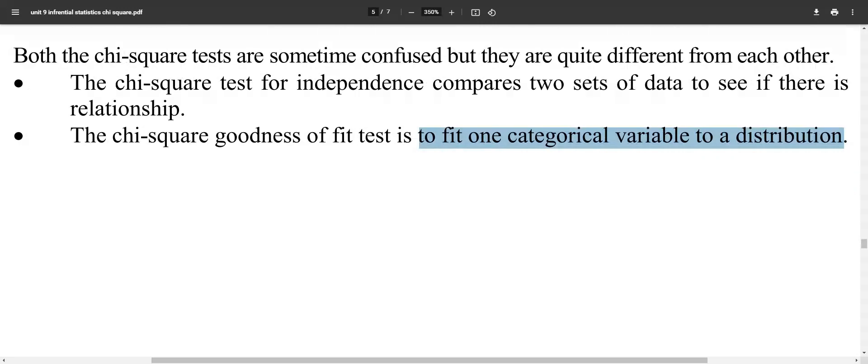I repeat, I repeat: the Chi-Square tests sometimes confuse. The two tests are different. The Chi-Square test which is independence compares two sets of data to see if there is a relationship, and the Chi-Square goodness of fit test - one categorical variable to a distribution.